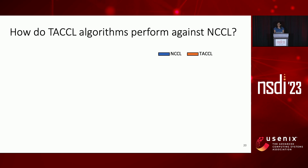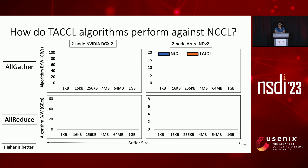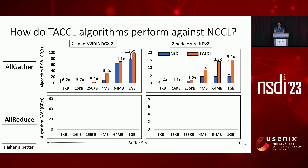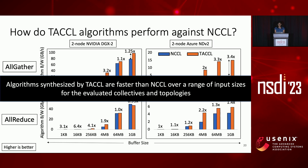How do algorithms synthesized by Tackle perform against NCCL? We show this for two collectives, all-gather and all-reduce, on NVIDIA DGX2 and two-node Azure NDV2. The x-axis shows the buffer size and the y-axis is the algorithm bandwidth, a metric of throughput — higher is better. For the all-gather algorithm on DGX2, the best Tackle algorithm performs 5 to 6.7x faster than NCCL for small sizes, and utilizes inter-node bandwidth better, performing up to 25% better for larger sizes. On Azure NDV2, we see a 10% to 3.4x speedup over NCCL. Similarly, for all-reduce, Tackle gives up to 6.4x speedup on DGX2 and up to 2.2x speedup on NDV2. Algorithms synthesized by Tackle are faster than NCCL over a range of input sizes for the evaluated collectives and topologies.